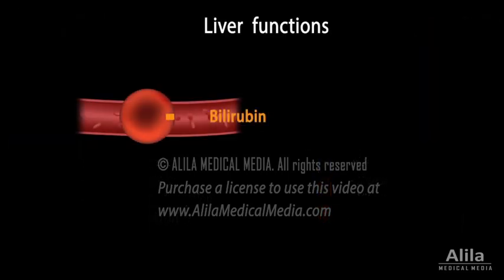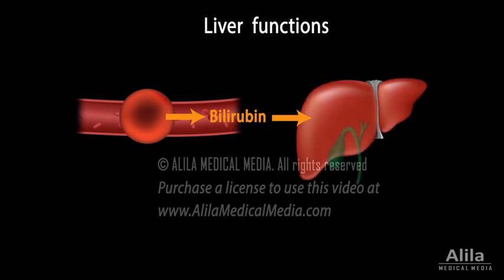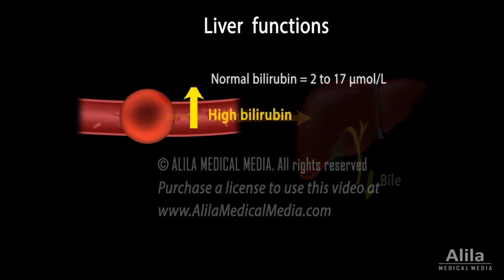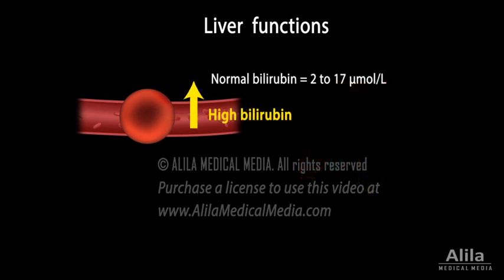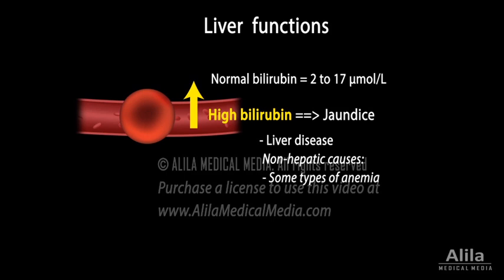Bilirubin is a waste product of red blood cell breakdown. It is transported to the liver, where it is processed and secreted into bile. Reduced liver function leads to accumulation of bilirubin in the blood, which gives the skin and the whites of the eyes a yellowish color known as jaundice. Plasma bilirubin level is increased in liver diseases and in some types of anemia.